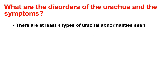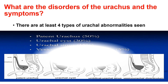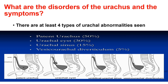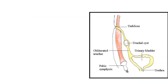There are at least four types of urachal abnormalities: patent urachus, urachal cyst, urachal sinus, and diverticulum. Of these, patent urachus is the most common one. Let's discuss them separately.